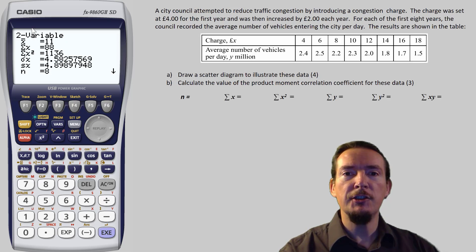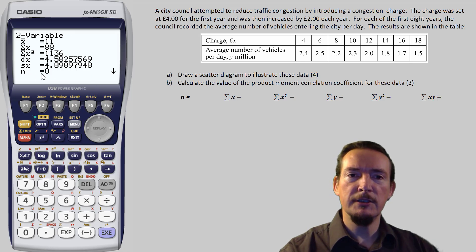For the PMCC calculation, we are going to need the n value, which is the number of elements. We are going to need sigma x, sigma y, sigma x squared, sigma y squared and sigma xy. So let's write all those down.